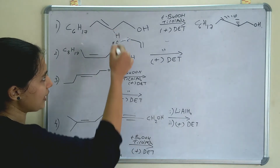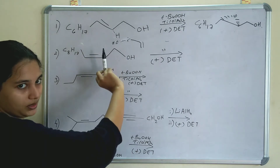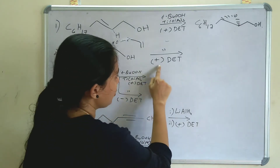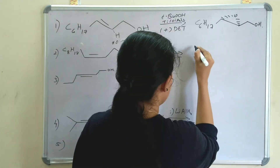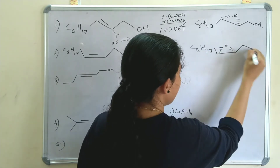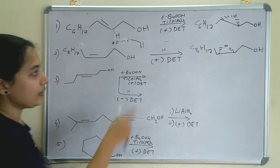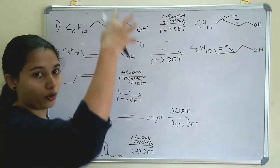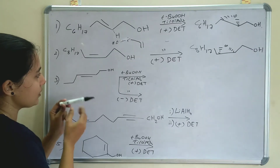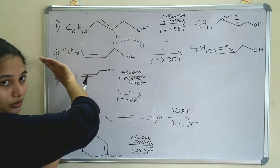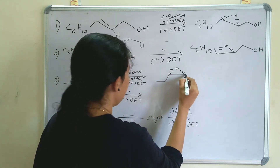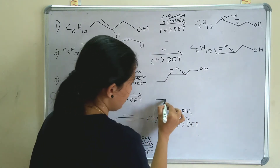In this next example, the same case applies. When this double bond is rotated to vertical, the upper right OH becomes upper left OH — so L-D applies. With (+)-DET given, the epoxide is below the plane (dash). The product is C8H17 with a dash epoxide; the OH group is not affected. If (−)-DET were used instead, the epoxide would be above the plane.